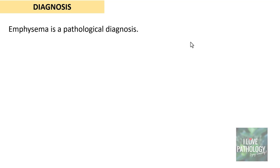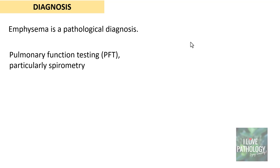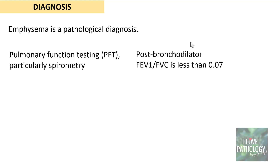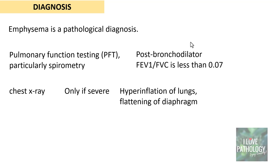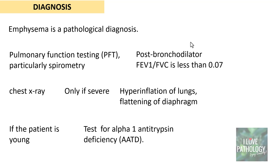For diagnosis, patients are subjected to pulmonary function testing, particularly spirometry. These COPDs normally respond to bronchodilator therapy, but if even after bronchodilator therapy the FEV1/FVC ratio is less than 0.7, that is diagnostic of emphysema. Chest X-ray is not routinely ordered; if severe, it may show hyperinflation of lungs and flattening of the diaphragm. If the patient is young, you must rule out congenital alpha-1 antitrypsin deficiency.